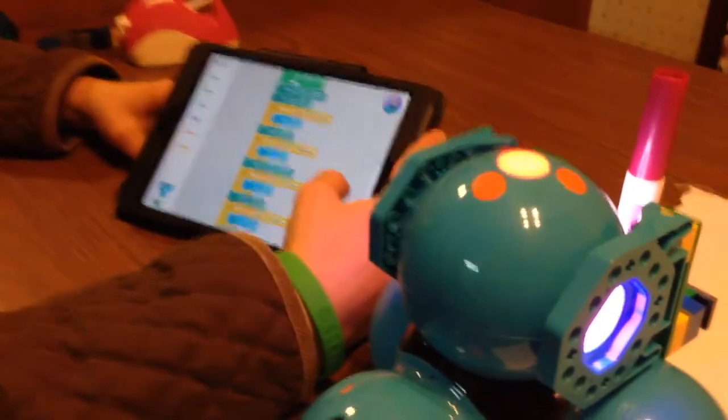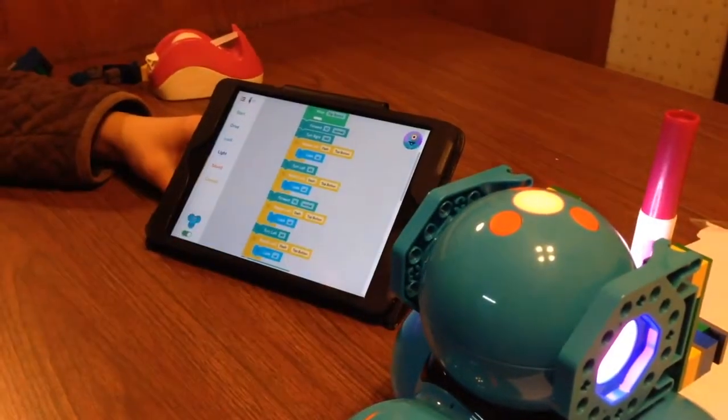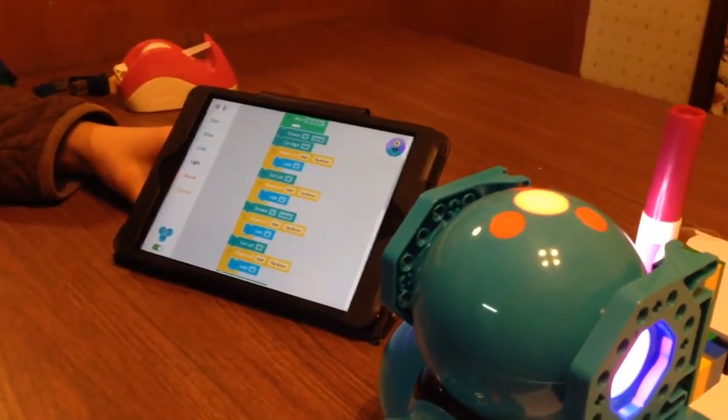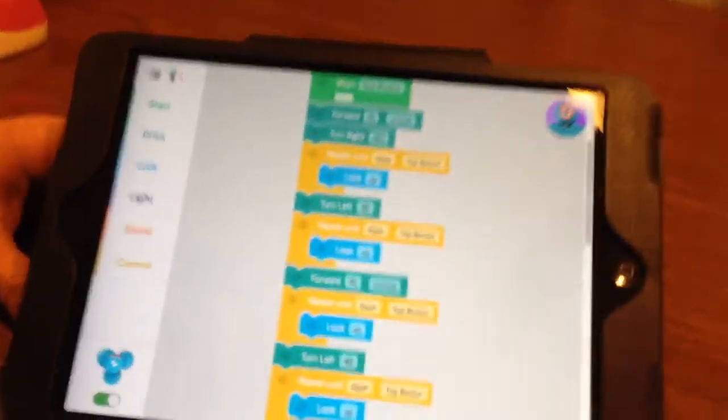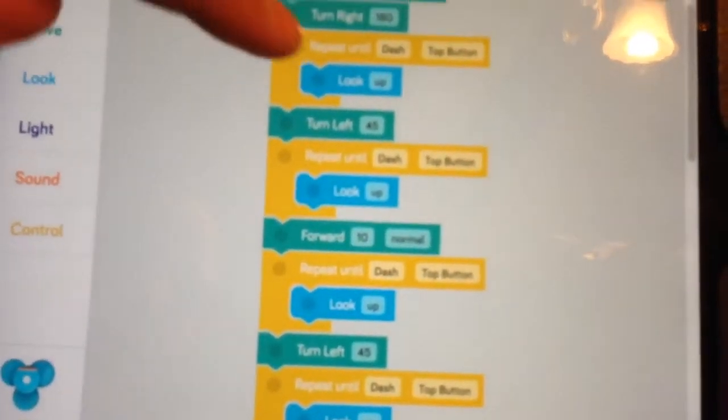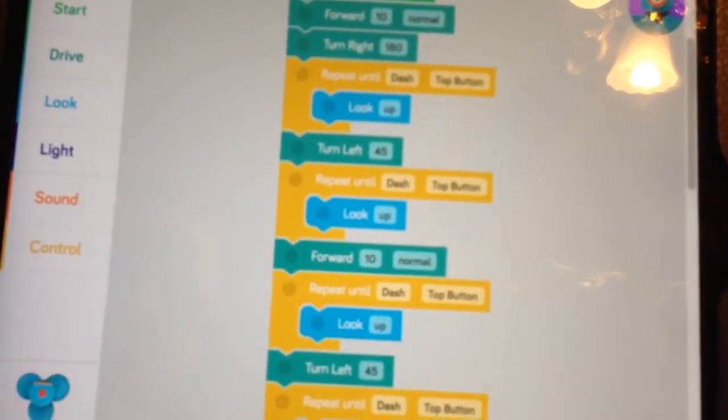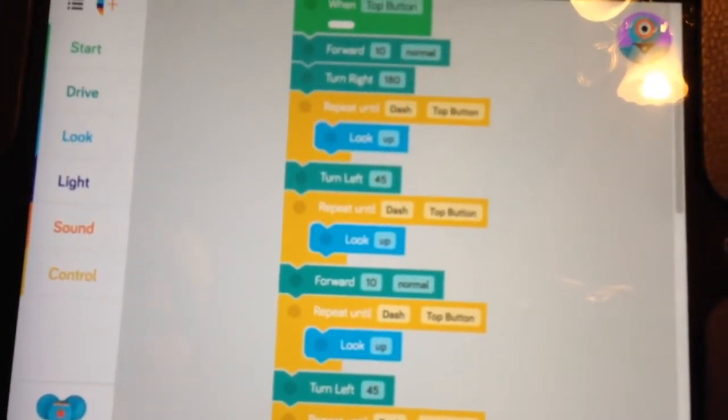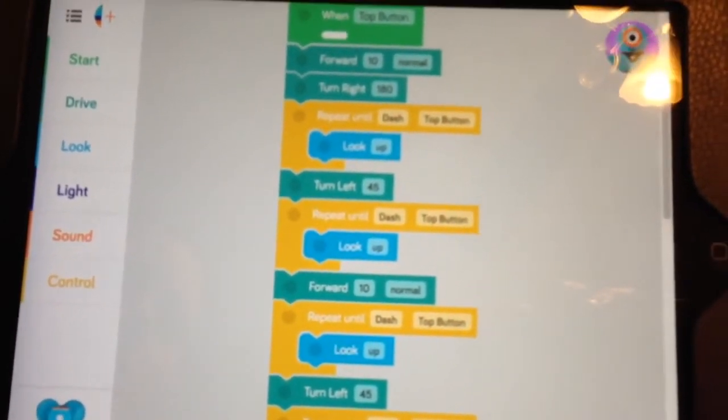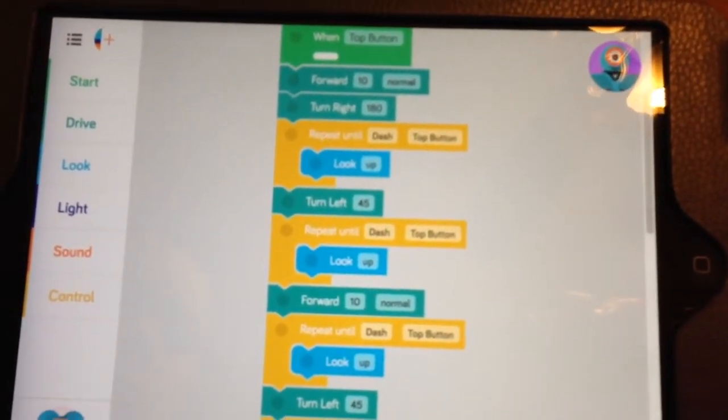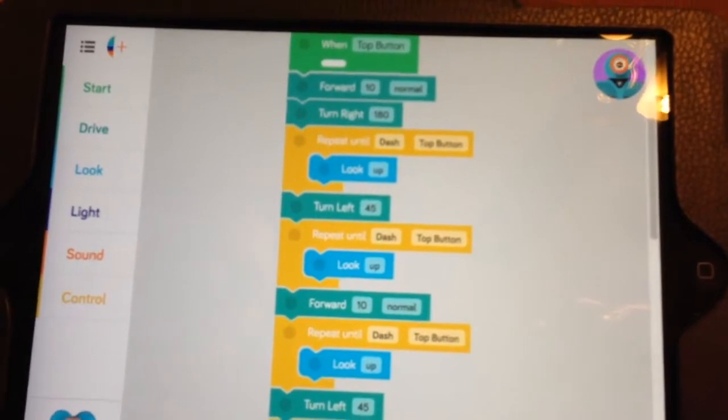And you had to do something to keep it from making a mess. What was that that you had to do? I had to keep on fixing so that his head goes up. Like all of these repeat until and look up. All of these is making sure that he corrects himself because otherwise he would just keep his head down the whole way and it would just look like scribbles.